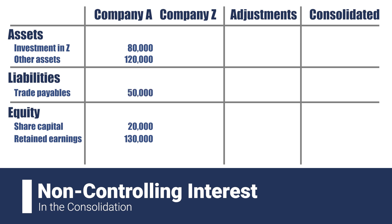Company Z's assets are composed of other assets amounting to $110,000. Its equity section is composed of share capital of $100,000 and no retained earnings section, because for the sake of simplicity we assume that Company Z has just been incorporated as at the day of consolidation. It also has some other payables amounting to $10,000.